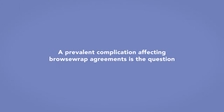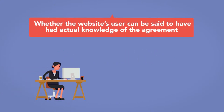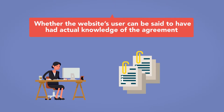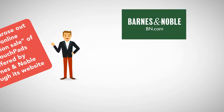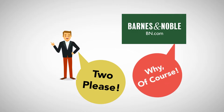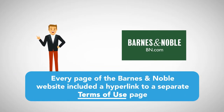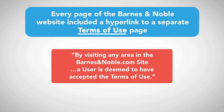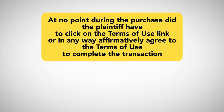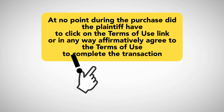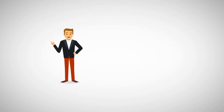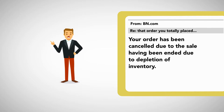A prevalent complication affecting browse wrap agreements is the question of whether a website user can be said to have had actual knowledge of the agreement. One case arose out of an online liquidation sale of HP TouchPads offered by Barnes & Noble through its website. The plaintiff purchased two of them and received an email confirmation. Every page of the Barnes & Noble website included a hyperlink to a separate terms of use page stating that by visiting any area of the BarnesandNoble.com site a user is deemed to have accepted the terms of use. However, at no point during the purchase did the plaintiff have to click on the terms of use link or affirmatively agree to the terms to complete the transaction. The following day, the buyer received notice that his order had been cancelled due to depletion of inventory.